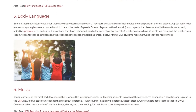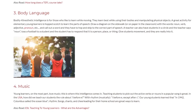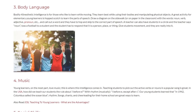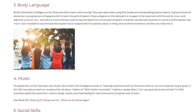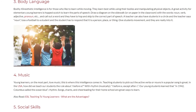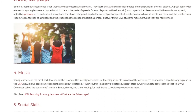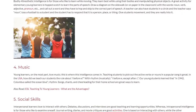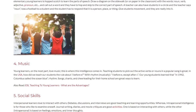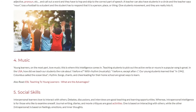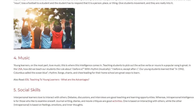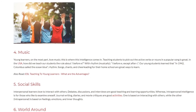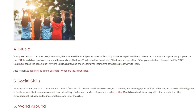4. Music. Young learners, for the most part, love music — this is where this intelligence comes in. Teaching students to pick out the active verbs or nouns in a popular song is great. In the USA, how did we teach students the rule about I before E? With rhythm, musically: 'I before E, except after C.' Young students also learned that 'In 1492, Columbus sailed the ocean blue' — rhythm. Songs, chants, and cheerleading for their school team are great ways to learn.